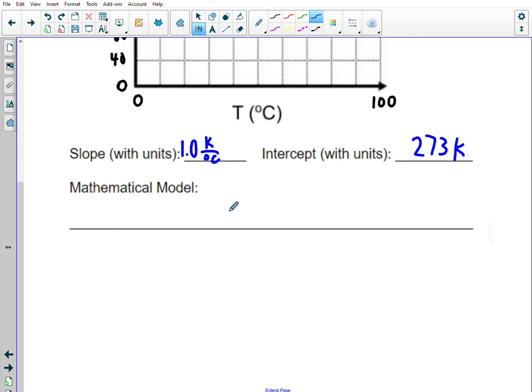The model should look like the Kelvin temperature equals a slope of one Kelvin per degree Celsius times the Celsius temperature plus 273 Kelvin. This slope does not change the value—it's multiplying by one—but it would change the unit. So if I plugged in a Celsius temperature here, Celsius degrees would cancel and then I'd be in Kelvin, which is what I want.